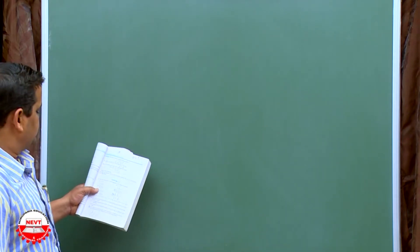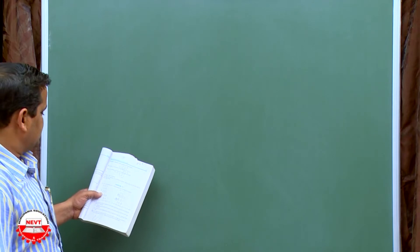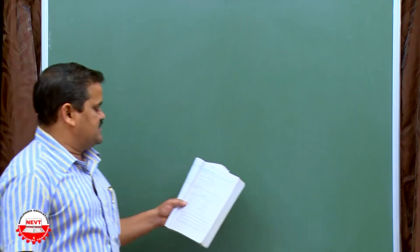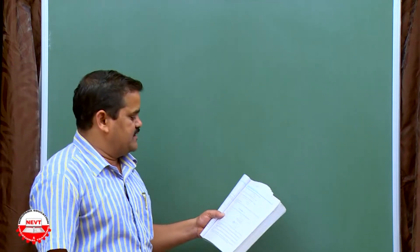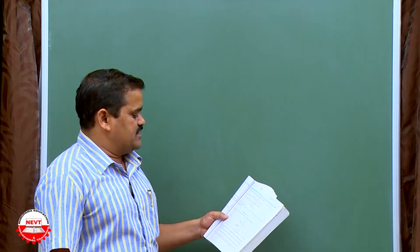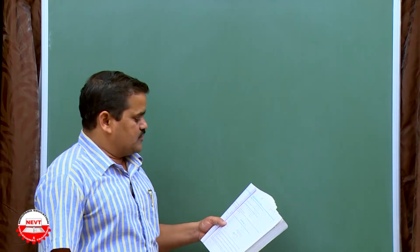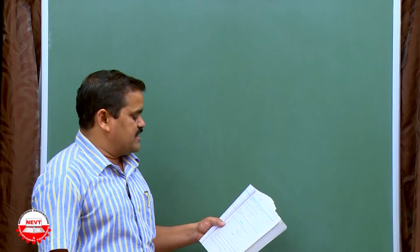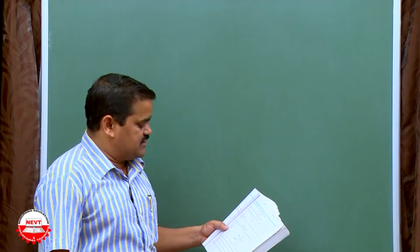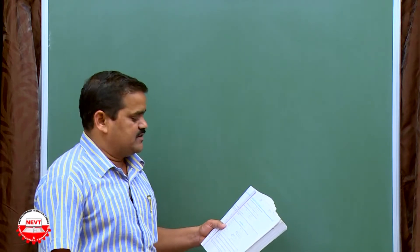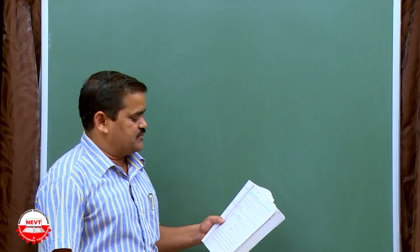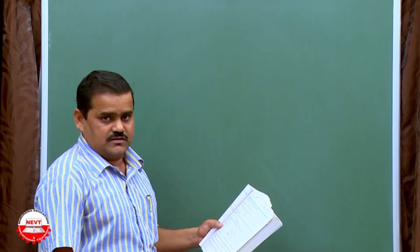For the third part: 3X minus Y is equal to 9, and 9X minus 3Y is equal to 9. Here, A1 by A2 is 1 by 3 and B1 by B2 is also 1 by 3. Since the ratios are equal, you are not able to solve this by the substitution method or any method in the usual sense.